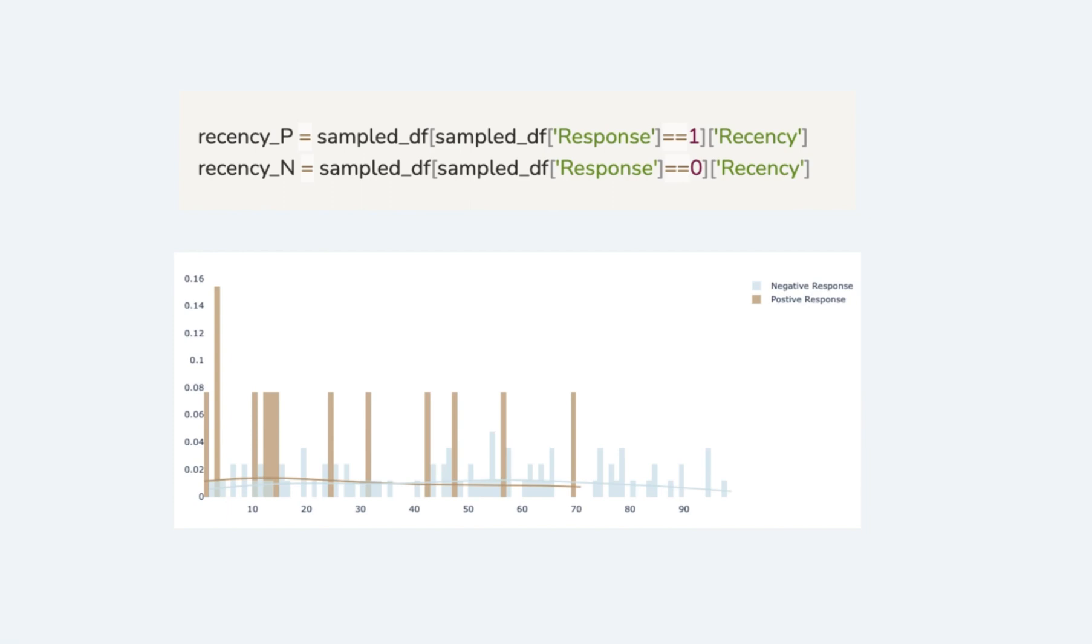For example, if I would like to test whether recency value, which is the number of days since customer's last purchase, contributes to the prediction of response, whether the customer accepted the offer in the last campaign, I can use a two-sample t-test. The first sample would be the recency of customers who accepted the offer. The second sample would be the recency of customers who rejected the offer.